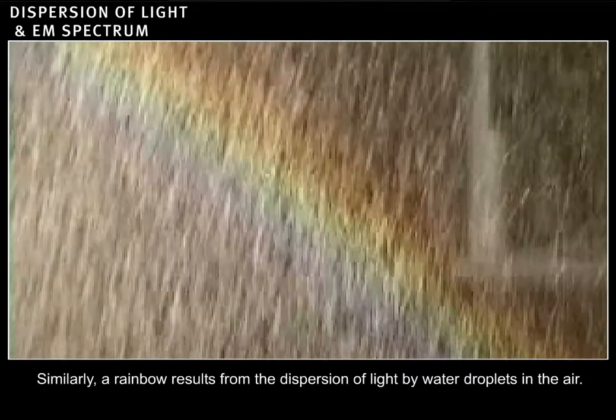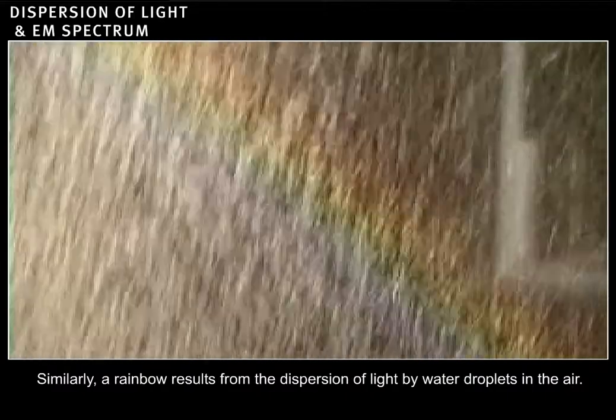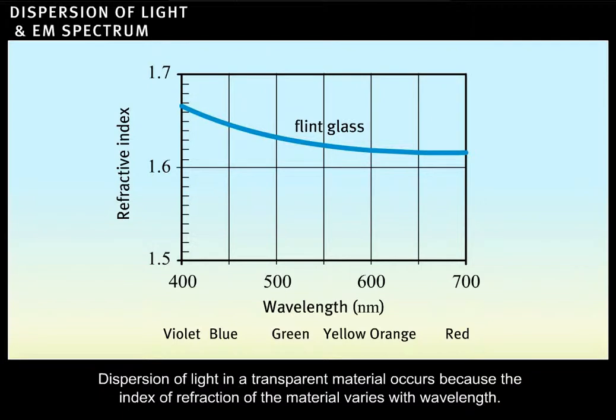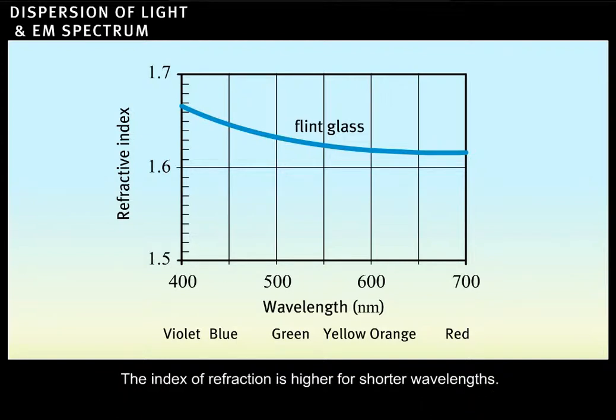Similarly, a rainbow results from the dispersion of light by water droplets in the air. Dispersion of light in a transparent material occurs because the index of refraction of the material varies with wavelength. The index of refraction is higher for shorter wavelengths.